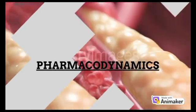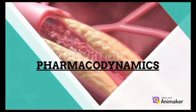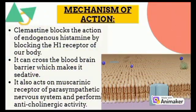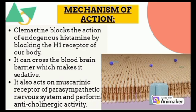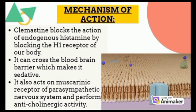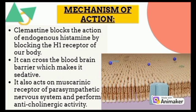Let's talk about its pharmacodynamics. Clemastine is a selective histamine H1 antagonist and binds to the H1 receptor. This blocks the action of endogenous histamine, which leads to temporary relief of the negative symptoms of histamine response to any allergen. It is sedative as it can cross the blood-brain barrier. It also acts as an antagonist of the muscarinic receptor of our body.